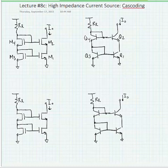One thing that we know about current sources is that we would like them to have high output impedances, and so one way that we can increase the output impedance is to cascode.